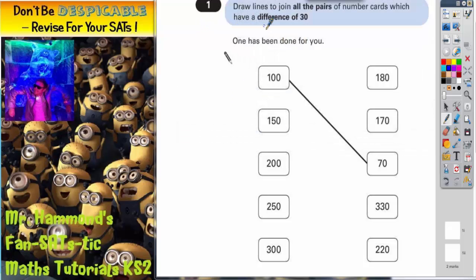Question number one. Draw lines to join all the pairs of number cards which have a difference of 30. One has been done for you.